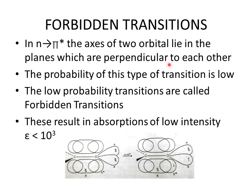The second category is forbidden transitions. If a transition occurs between two orbitals that are perpendicular to each other, the probability for this type of transition is low, and these are called forbidden transitions. Their molar absorptivity value will be less than 10³. For example, in n→π* transitions: the n orbital and the π* orbital are perpendicular to each other, so the probability of transition is low, and the resulting absorption band is less intense.